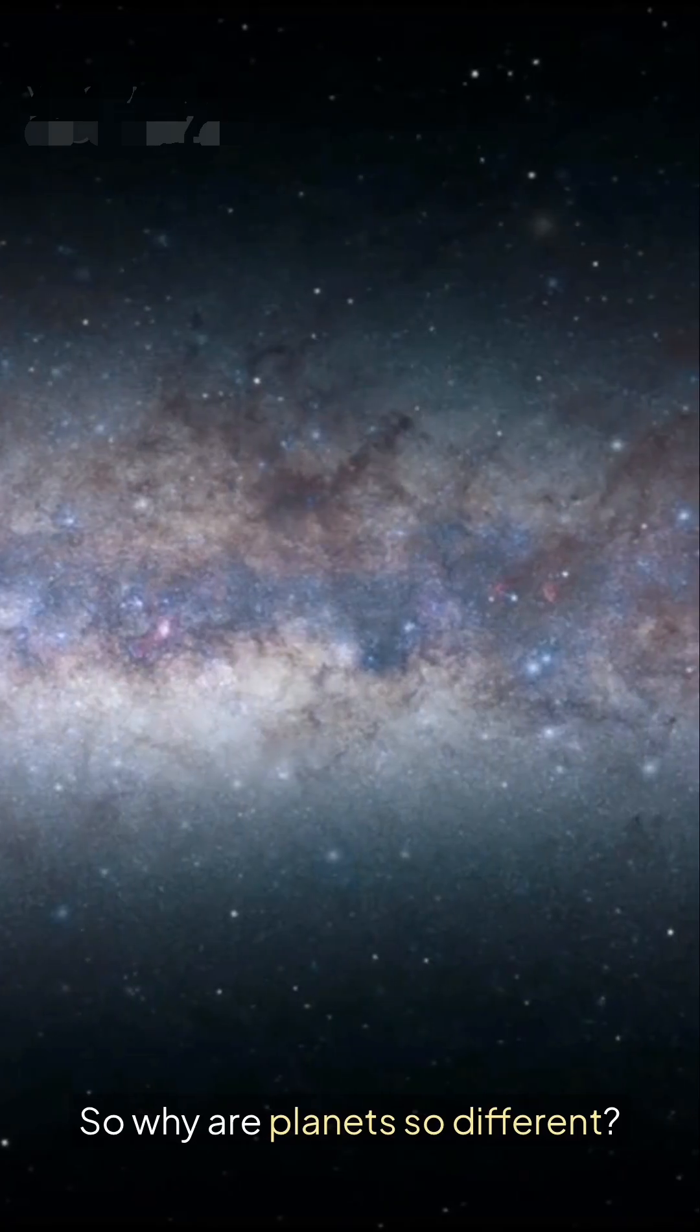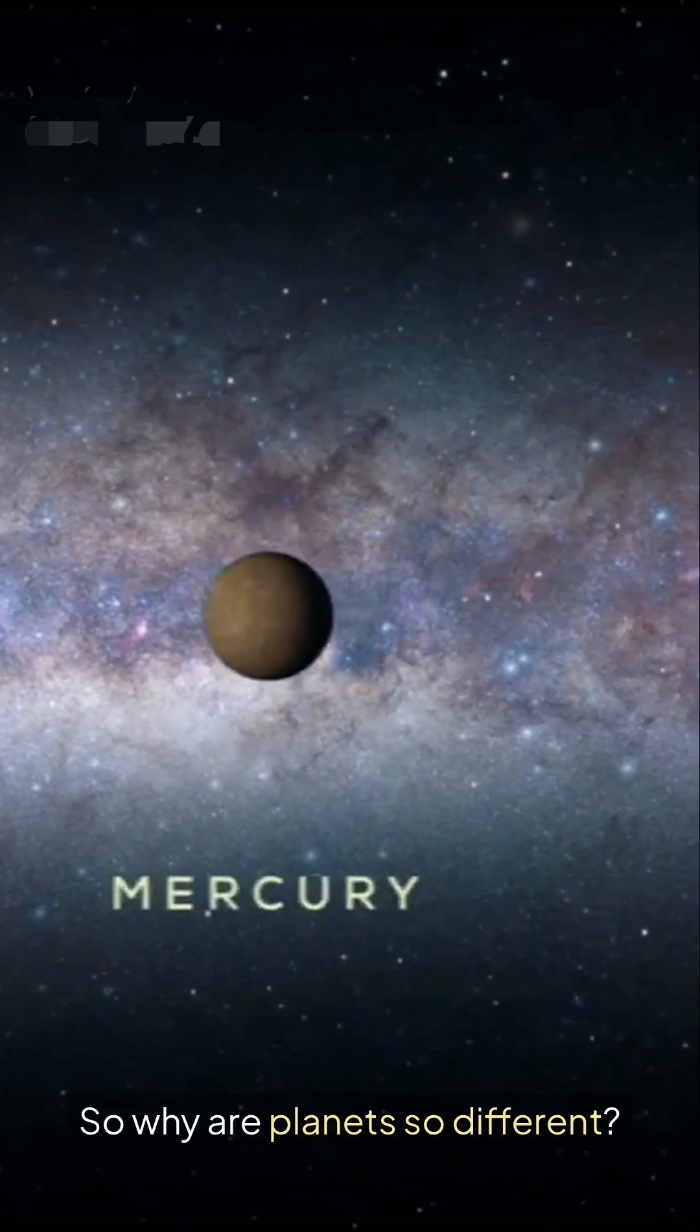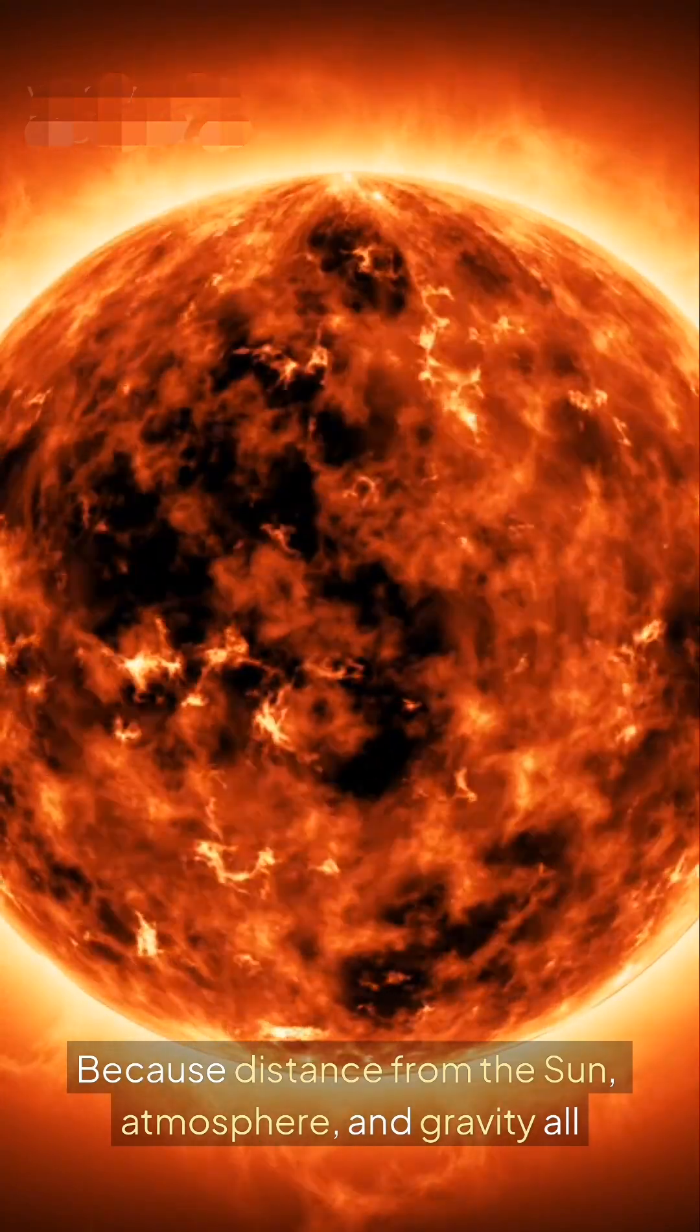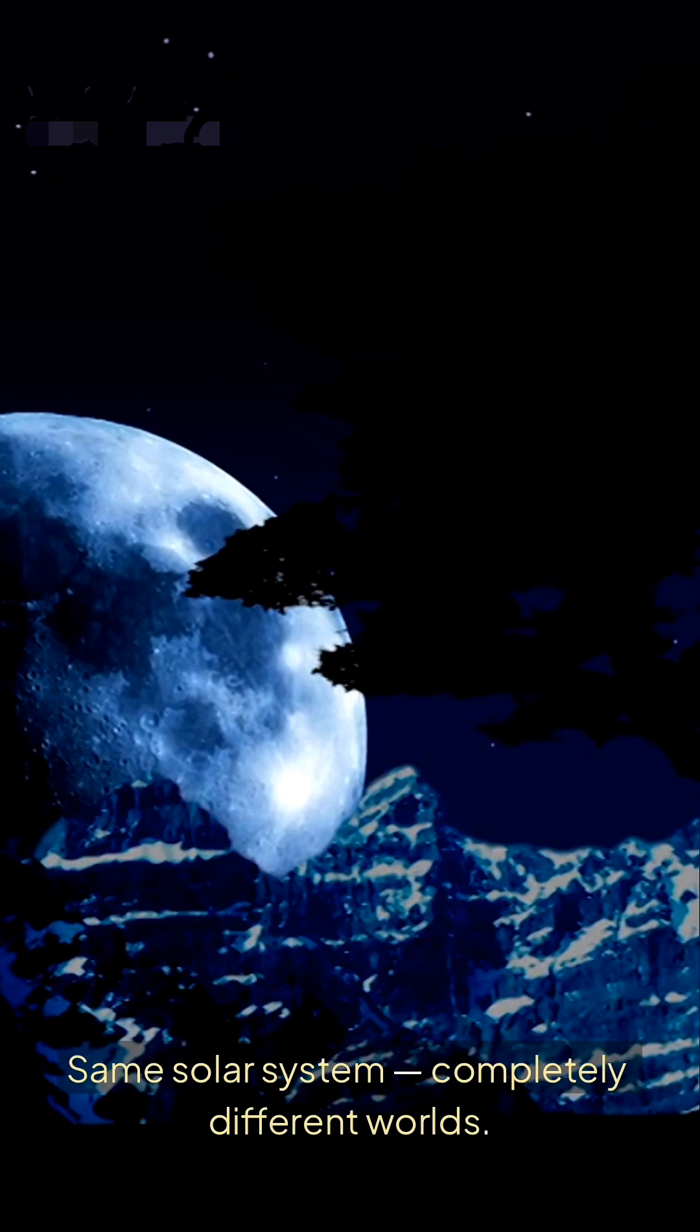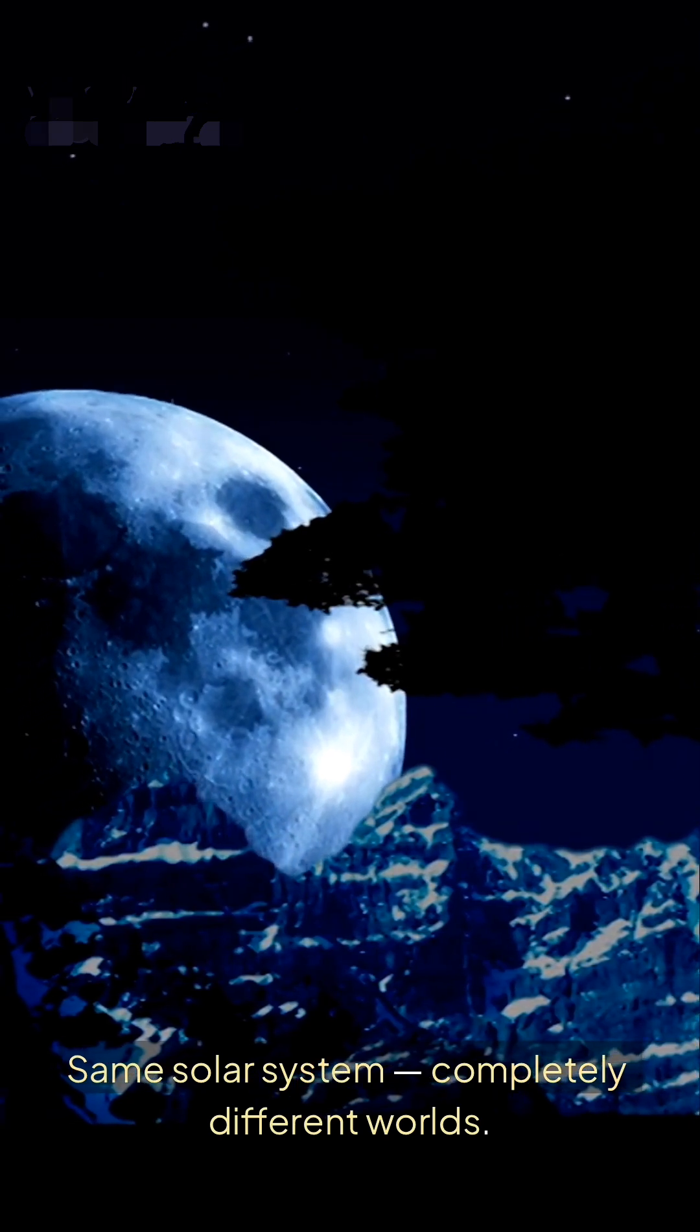So why are planets so different? Because distance from the sun, atmosphere, and gravity all shape their destiny. Same solar system, completely different worlds.